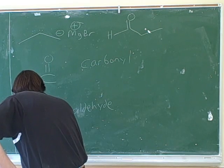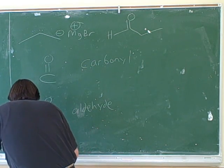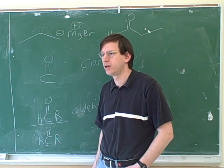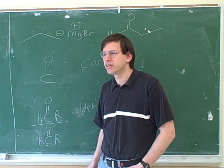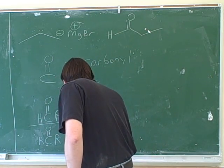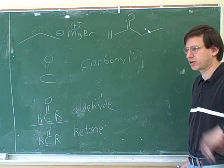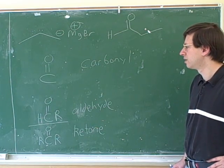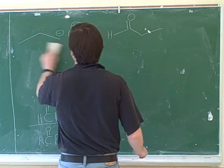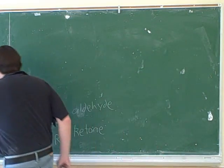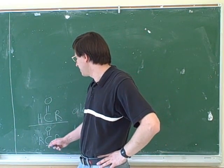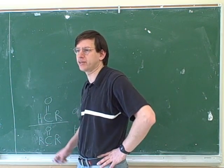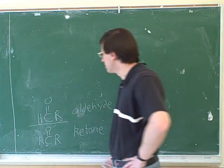Another possibility is a carbonyl carbon attached to two carbon chains — this is called a ketone. A carbonyl attached to two carbon chains is a ketone. All that matters is that the atoms directly connected to the carbonyl on each side are carbons; there could be any substituents on the rest of the carbon chains.